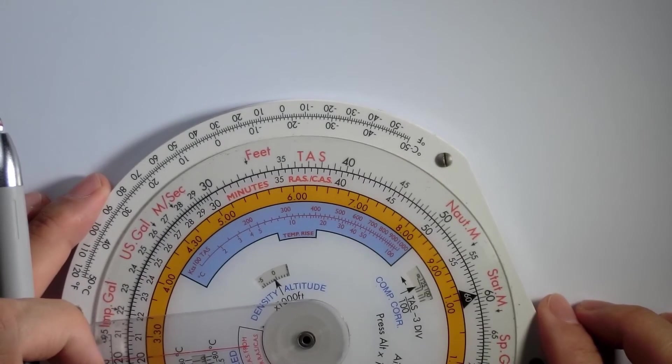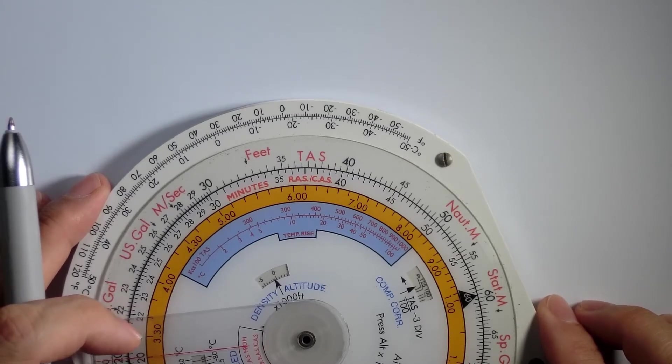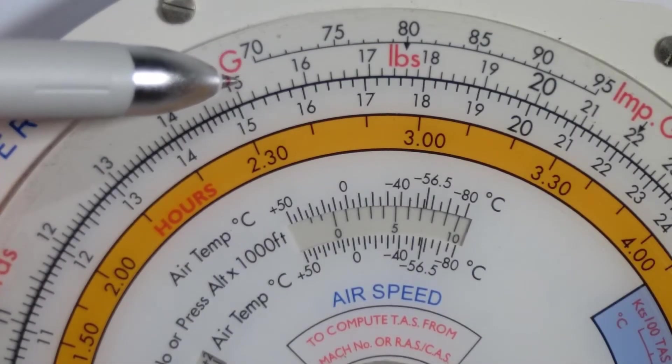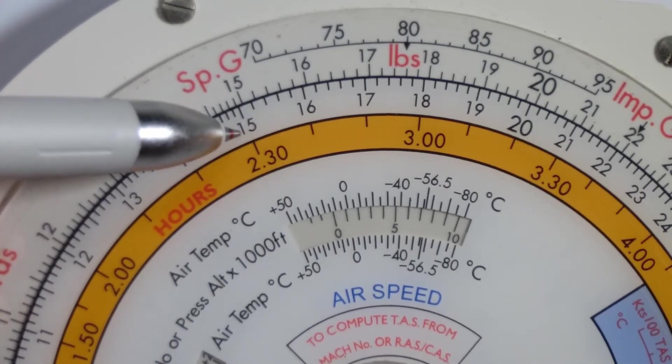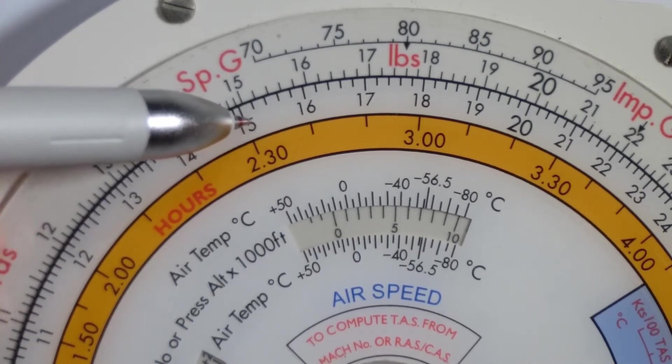For this demonstration, I've picked some numbers that are easier to show you because they're all located within the same portion of the CRP5. We have an outer scale where we will read the true airspeed, and an inner scale where we will input or read off the rectified or calibrated airspeed.